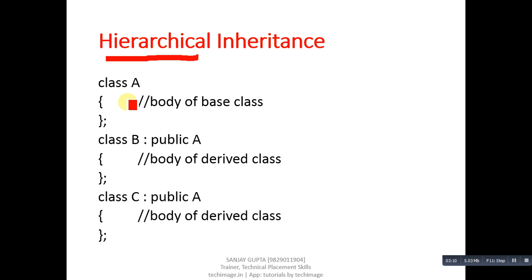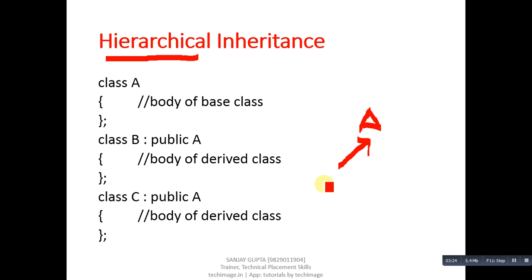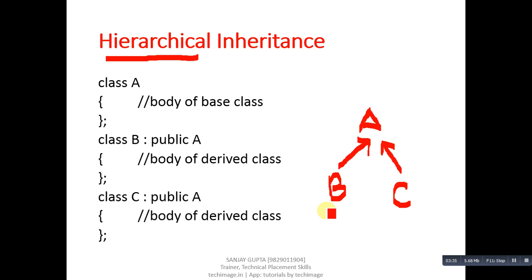The fourth type of inheritance is hierarchical inheritance. In this case, A is the base class, and it is inherited by both B class and C class. The single base class A is first inherited by B class, then independently inherited by C class. So B class has features of A class, and C class also has features of A class.